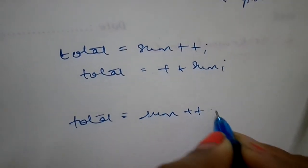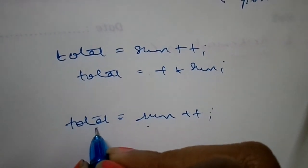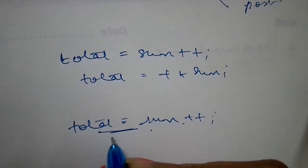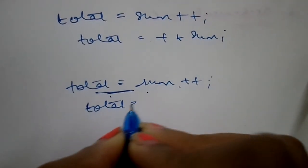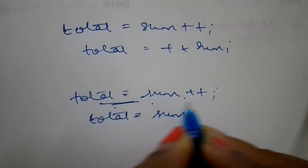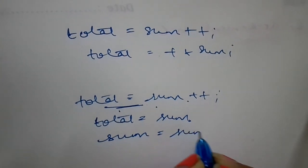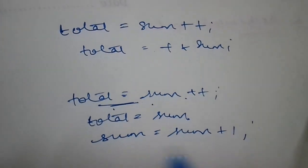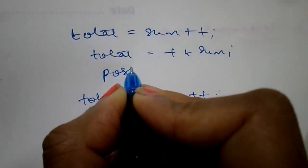When I say total = sum++, it means that first it's asking to assign before the increment. So what it does is total = sum, and then sum++. Then it's telling me to add: sum = sum + 1. This is post increment.